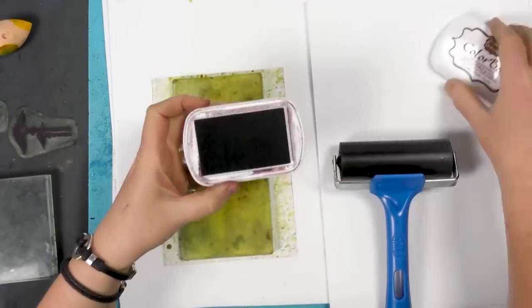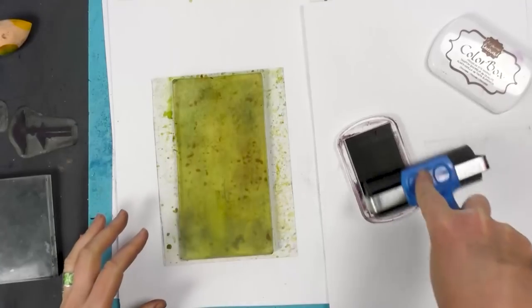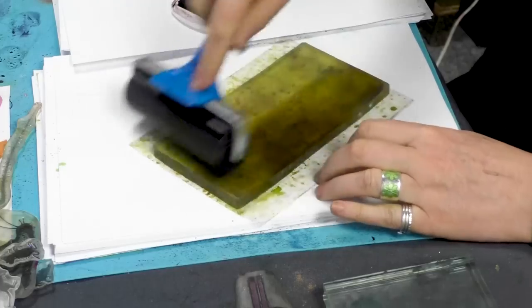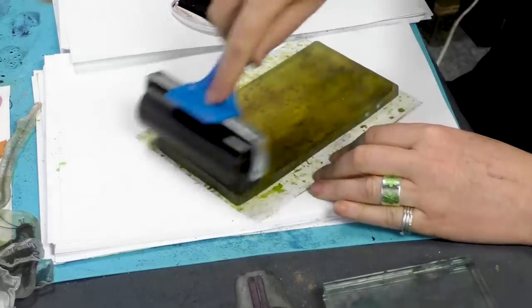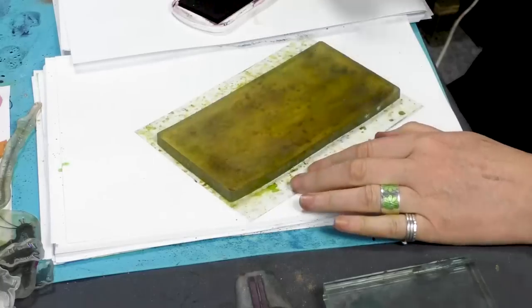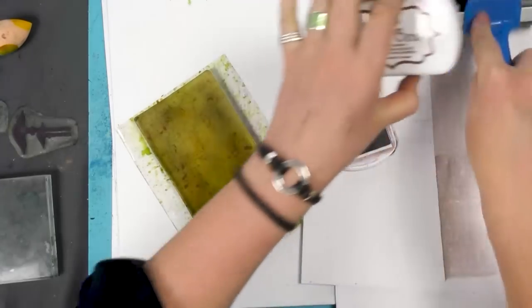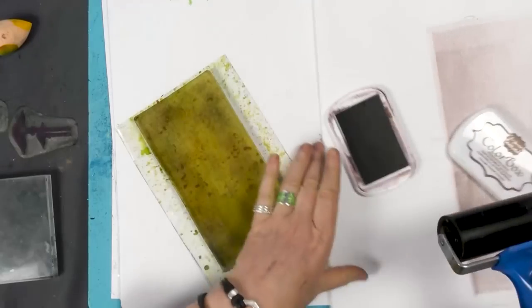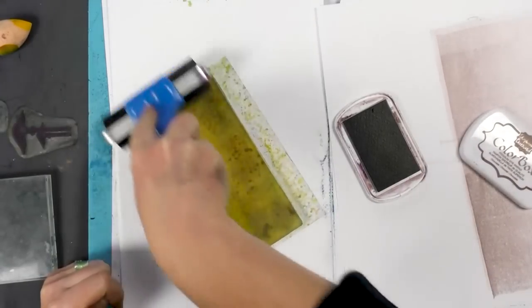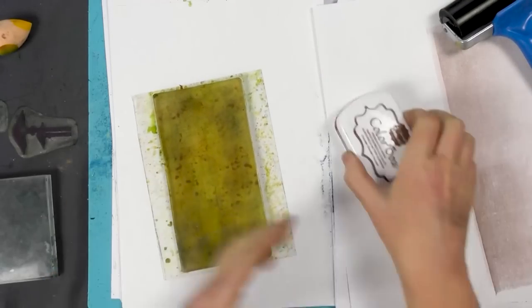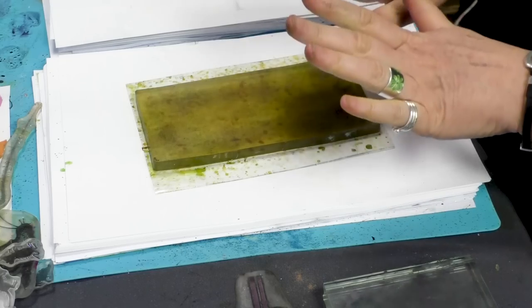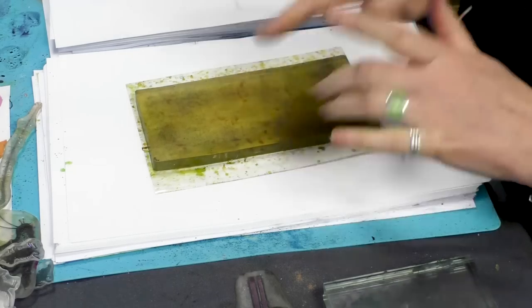So let's start by transferring some of the ink onto our gel press. Now as you can see my gel press is a very well used gel press. It's been stained with lots of inks. It's had just about everything thrown at it but it does make no difference at all to the actual end result. I've placed the colour box on.